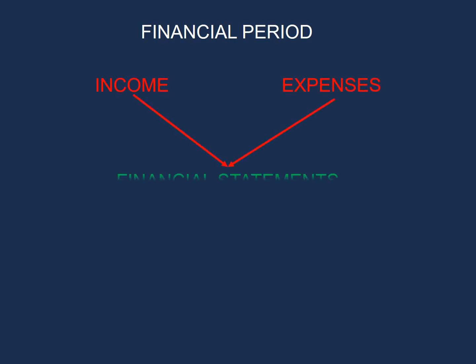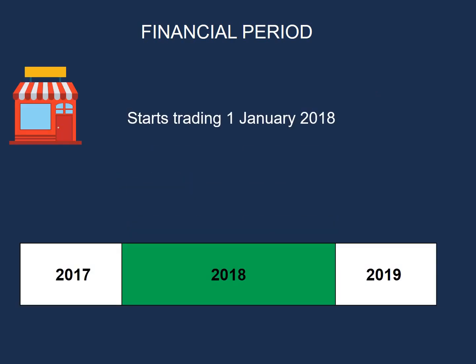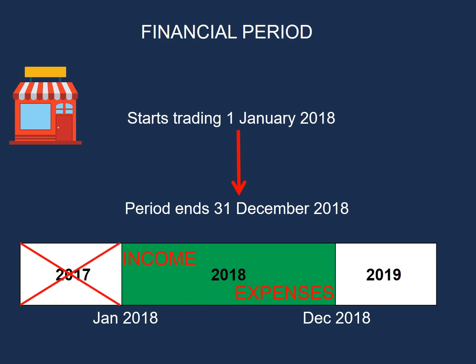It's important to report in our financial statements for the 12 months only — our income and expenses will be entered for the 12-month period only. This is because of two principles: the matching principle and the accrual principle, which we learned in previous videos. For example, a business that starts trading 1 January 2018 and ends 31 December 2018 will only enter income and expenses for 2018. The previous year's information from 2017 will not be entered, nor will information from 2019.